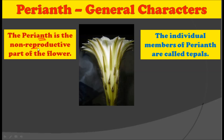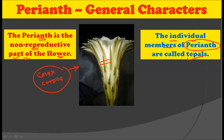The Perianth is the non-reproductive part of the flower. As you know, Perianth is made up of calyx and corolla, and both these organs are the accessory whorls of a flower. That is why they do not take direct part in the reproduction of plants. The individual members of the Perianth are called tepals — similar to how individual members of the calyx are called sepals and individual members of the corolla are called petals.